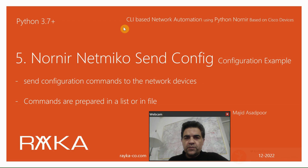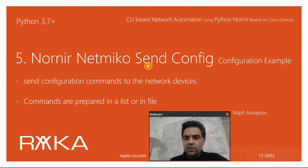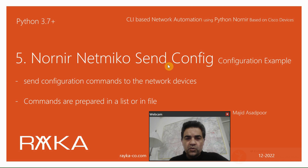Welcome to another video on CLI-based network automation using Python Nornir, based on Cisco devices. In the previous section we used the Nornir Netmiko plugin to send monitoring commands to network devices. In this section we will use the same plugin to send configuration commands. There are two methods to prepare configuration commands: through a list or through a file. Both methods will be demonstrated in this section.